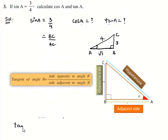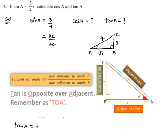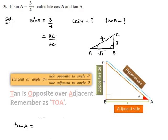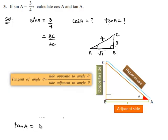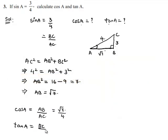He also asked us to find the value of tanA. We know that tanA is equal to the opposite side divided by the adjacent side. Here, the opposite side to angle A is BC and the adjacent side is AB, so tanA = 3 / √7.